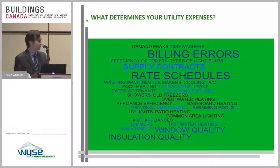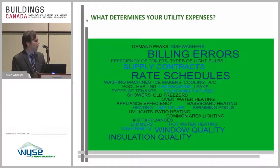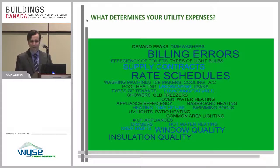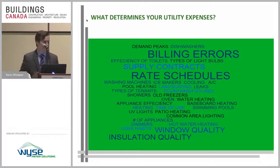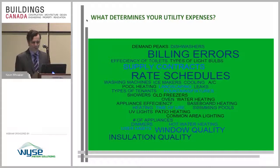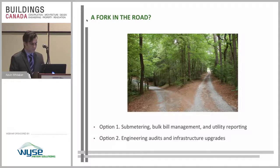Other things that determine your utility expenses that an owner or property manager may have some influence over include window quality, insulation quality, and landscaping. Also, types of tenants make a huge difference in your utility expense. We're probably all familiar with tenants who in summer have the AC running on high yet their windows or balcony door are open. In those cases they don't think about what the expense is going to cost, but if you're a property manager, owner, or on the condo board you're very aware of what kind of costs that incurs.